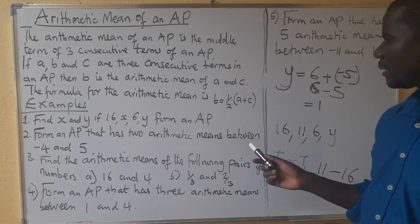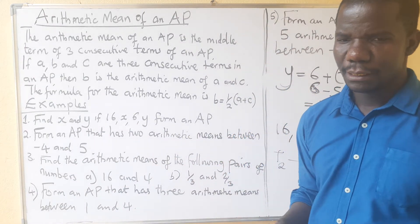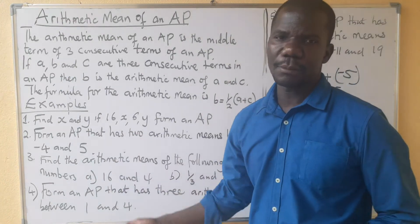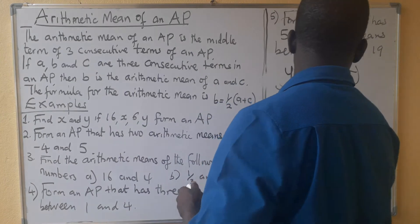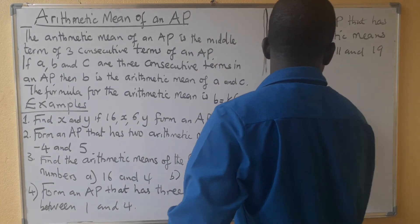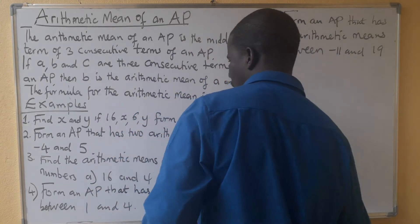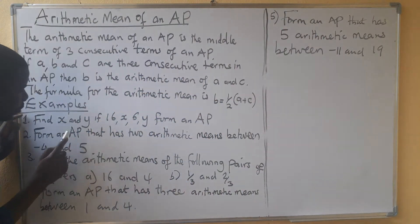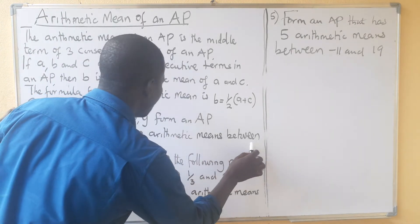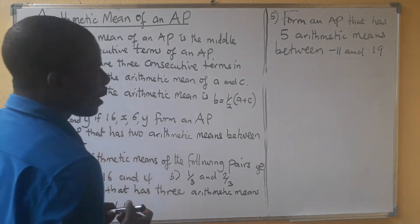You should be able to find one of these values even if the arithmetic mean is given. Now let's go to the second question: form an arithmetic progression that has two arithmetic means between negative 4 and 5.